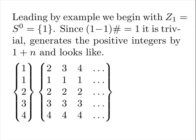Leading by example, we begin with Z sub one equals S zero, generating the singleton set of one. Since S first minor primordial is by definition one, it trivially generates the positive integers via one plus n and looks like the following. Note the gaps are identically equal to one and tuples identically equal to length.